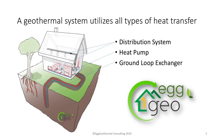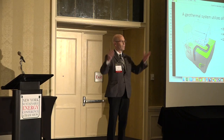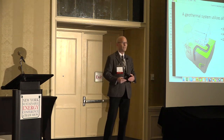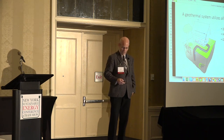Every geothermal system has three components: a ground loop or ground exchanger from which the heat pump gets its energy; a heat pump that does the work of heating or cooling based on that energy exchange; and a distribution system — that's going to be ductwork like a forced air duct system, a radiant floor, or radiators along the wall.